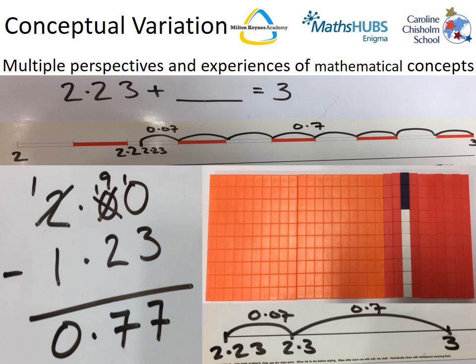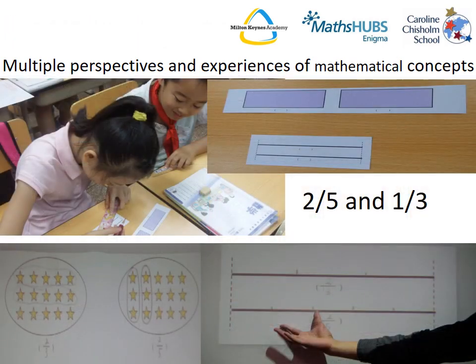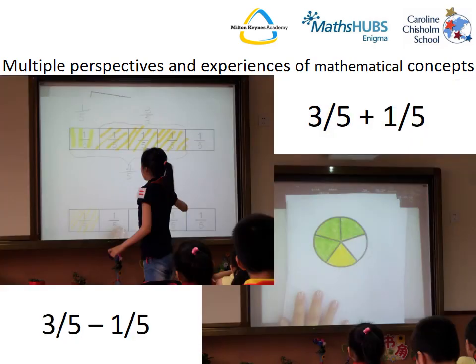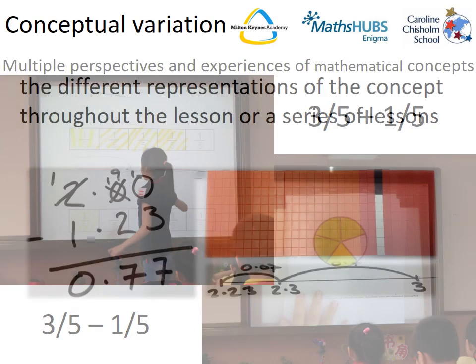Conceptual variation looks at multiple perspectives and experiences of mathematical concepts. It also, importantly, makes comparisons between all the different perspectives, so students make the links themselves and choose their preferred and most appropriate approach. This is a lesson in a primary school in Shanghai. Students were expected to express three-fifths plus one-fifth using two separate diagrams. The misconceptions came through when they had to subtract one-fifth from three-fifths, again using the two separate diagrams. Conceptual variation is about highlighting the different representations of the same concept, either throughout the lesson or a series of lessons.